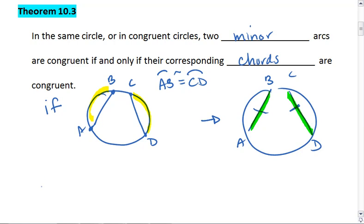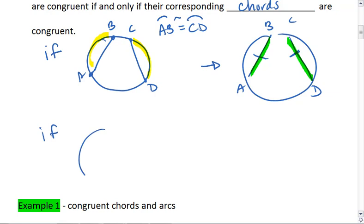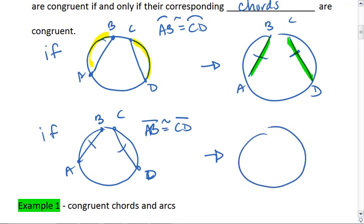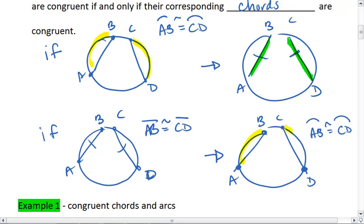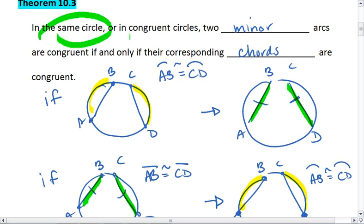This works the other way as well. If the two chords are congruent, so if segment AB is congruent to segment CD, then the two arcs must be congruent. Arc AB is congruent to arc CD. So if arcs are congruent, then the corresponding chords are congruent, and if chords are congruent, then corresponding arcs are congruent. The important thing is this needs to be in either the same circle or in congruent circles.